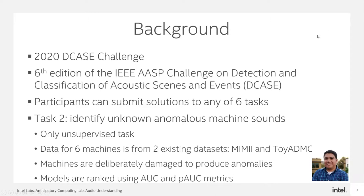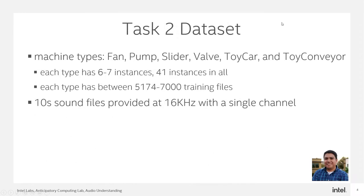The six machine types are fan, pump, slider, valve, toy car, and toy conveyor. Each type has between six and seven instances for a total of 41, and there are between 5,100 and 7,000 training files for each machine type. Each sound file has a 10-second recording that has been downsampled at 16K and has a single channel. Additionally, each recording has been corrupted with environmental noise. Only noisy recordings are provided.